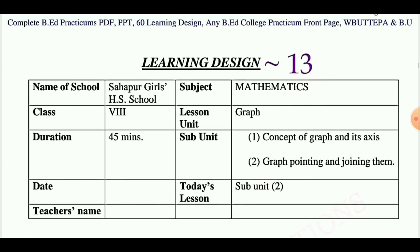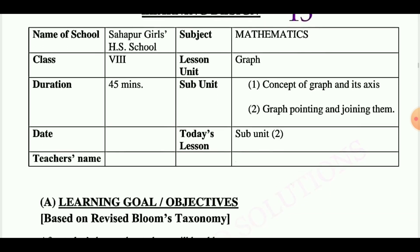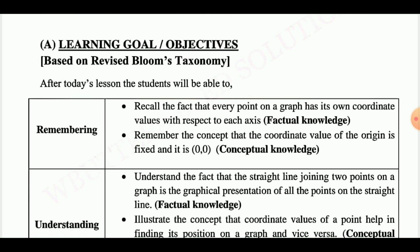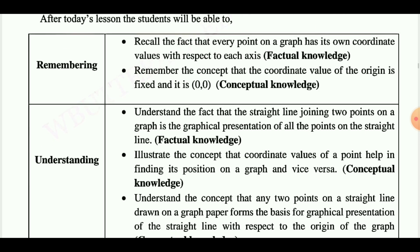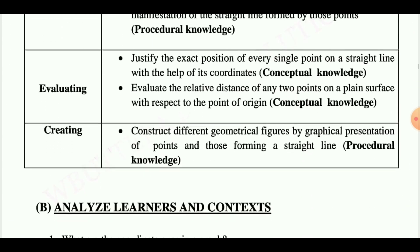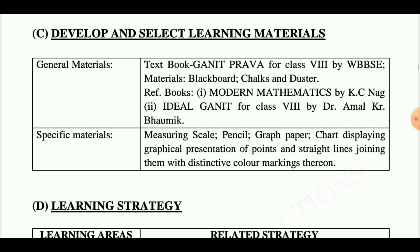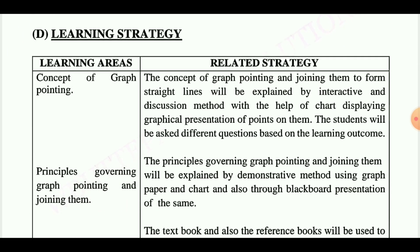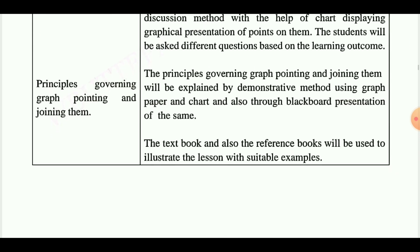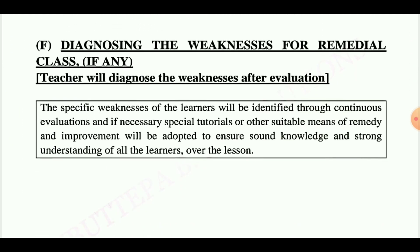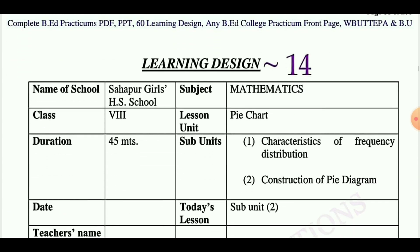Learning design number thirteen is taken from class eight, today's lesson subunit two is graph pointing and joining. After this lesson, students will be able to remember, understand, apply, analyze, evaluate, and create. Analyze learner and context, develop and select learning materials, learning strategy divided into two parts: learning areas and related strategy. Learning areas include concept of graph pointing and principle governing graph pointing and joining. Design for evaluation and diagnosing the weakness for remedial class.